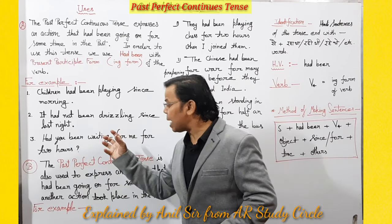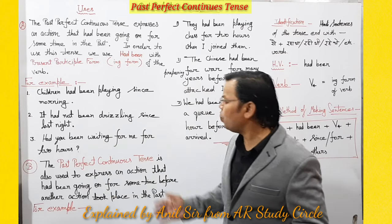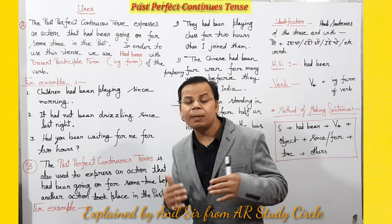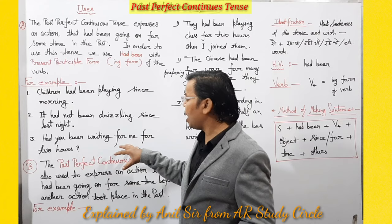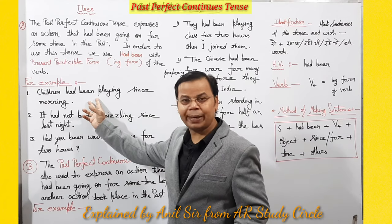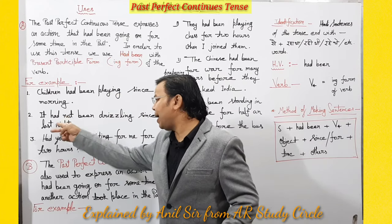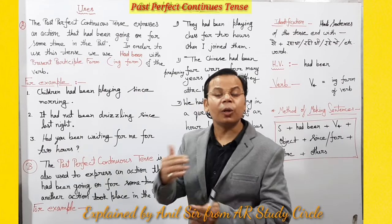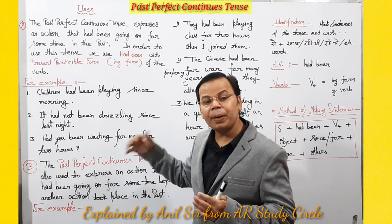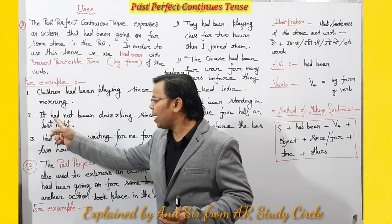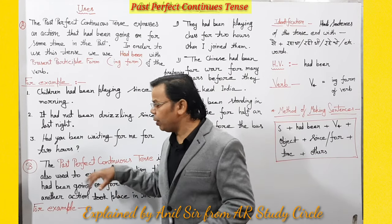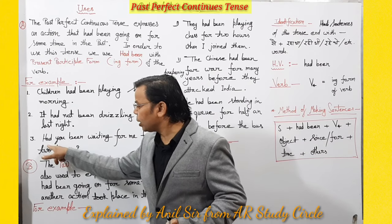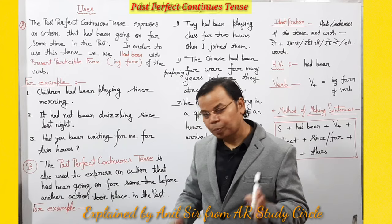Third example in interrogative form: 'Had you been waiting for me for two hours?' — Kya aap do ghante se mera intezaar kar rahe the? So we have seen all three types of sentences: affirmative — 'had been playing'; negative — 'had not been drizzling'; interrogative — 'had' comes before the subject, then 'been'. When making negative sentences, 'not' comes between 'had' and 'been'.